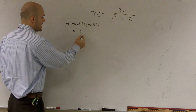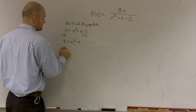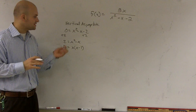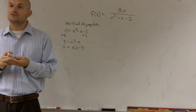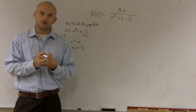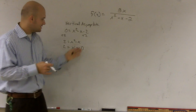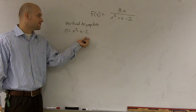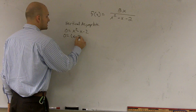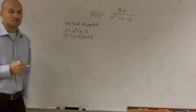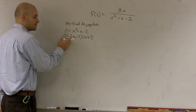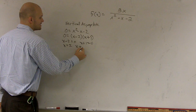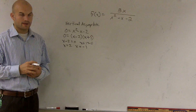A big mistake students always want to make is to add 2, getting 2 equals x squared minus x, and then trying to factor out an x — and then they're stuck. Whenever you have a trinomial, there are only three ways to solve it: general factoring, completing the square, or the quadratic formula. You can't do this adding approach. So I need to factor x squared minus x minus 2. What two numbers multiply to give negative 2 and add to give negative 1? You get 0 equals (x minus 2)(x plus 1). So x minus 2 equals 0 or x plus 1 equals 0, giving x equals 2 and x equals negative 1.